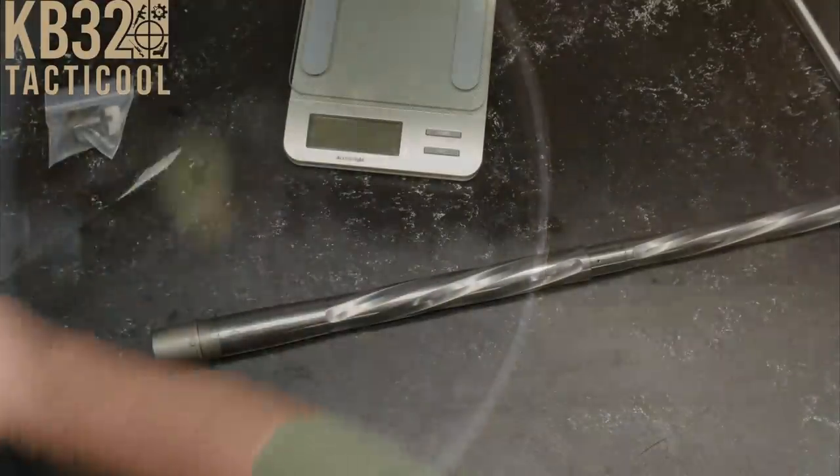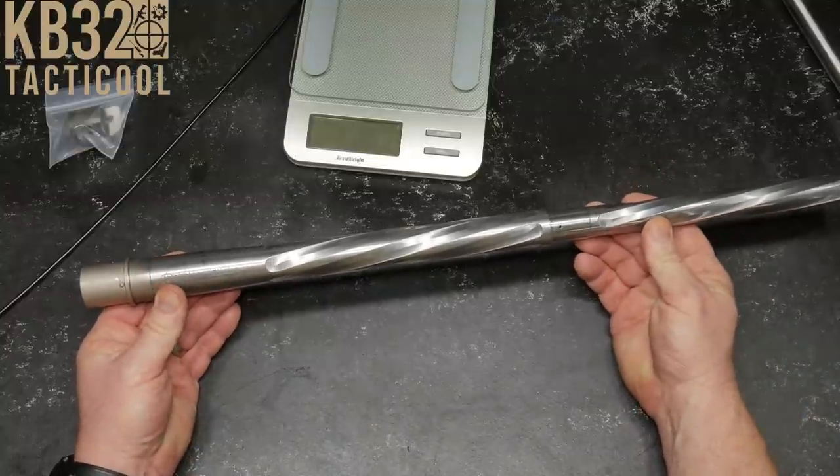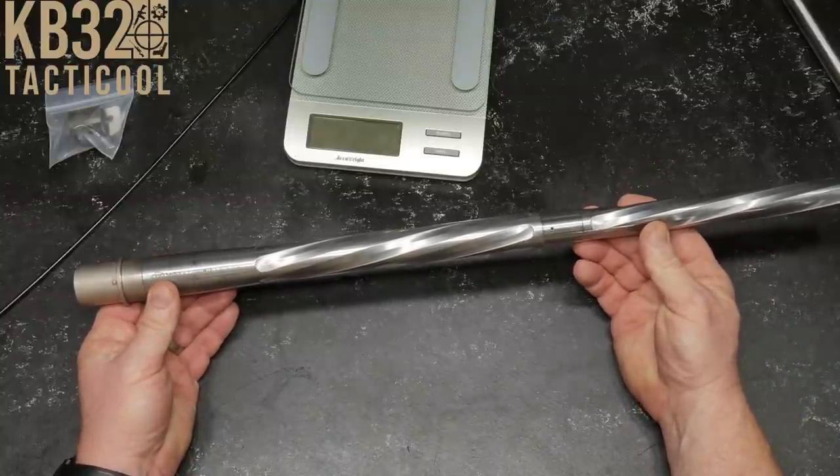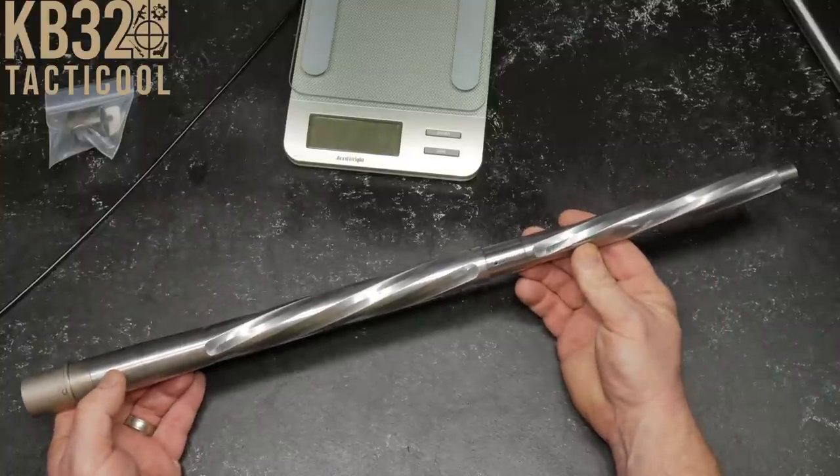We'll go ahead and put a couple rounds through it, I'll run some brushes, we'll break this thing in perfectly. But that's it guys. The 6.5 Creedmoor barrel, Hitman Industries, 1 in 8 twist, 5R, 416 stainless steel. Not bad, Justin. I'm looking forward to putting this thing together.